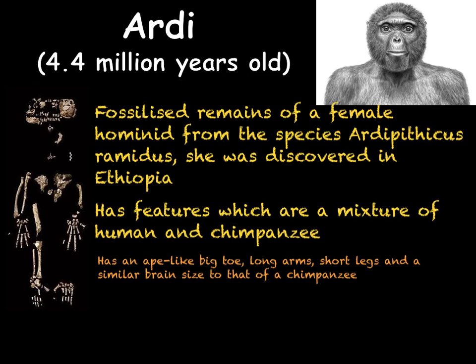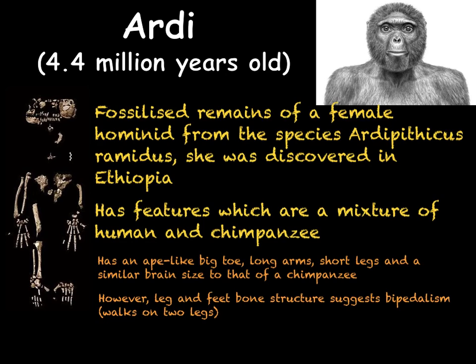Ardy also has quite long arms and very short legs, far more like a chimpanzee than a modern human. Her brain size was much smaller than ours and about the same size as a chimpanzee's — throughout human evolution brain size has become massively larger. However, she is not completely like a chimpanzee: the structure of her legs and the bones of her feet suggest that she was bipedal, meaning she walked on two legs upright without using her hands to help her walk, which is something chimpanzees need to do.